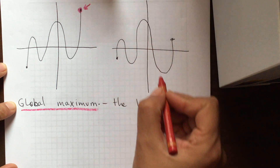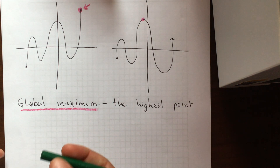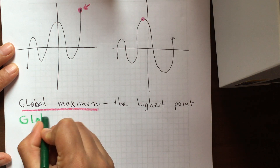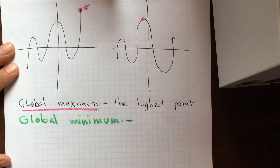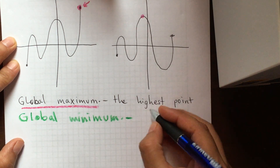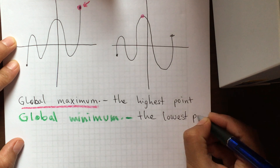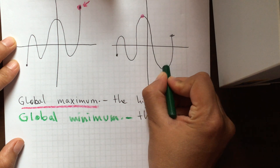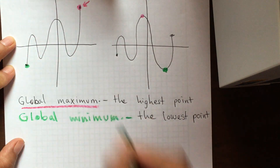On this second graph, the global maximum would be this point right here, since this is the highest point on all the graph. When it's asking for the global minimum, it refers to the lowest point in the graph. On this graph the lowest point is right here, and on this other graph the lowest point would be right here.